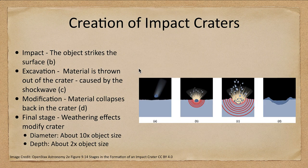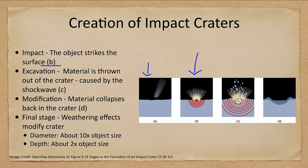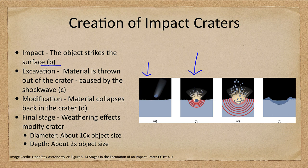So let's look at how the crater forms. First, A is just the object coming in. In B, we get the impact — the object impacting the surface. What happens then is an intense conversion of energy. The meteor had a lot of kinetic energy — energy of motion traveling at very high speeds — and that energy is suddenly gone because it stops. It then converts into other forms of energy such as heat, throwing material back out. This is the evacuation stage, shown in C, where material is thrown out of the crater caused by the shock wave of the meteor impacting.